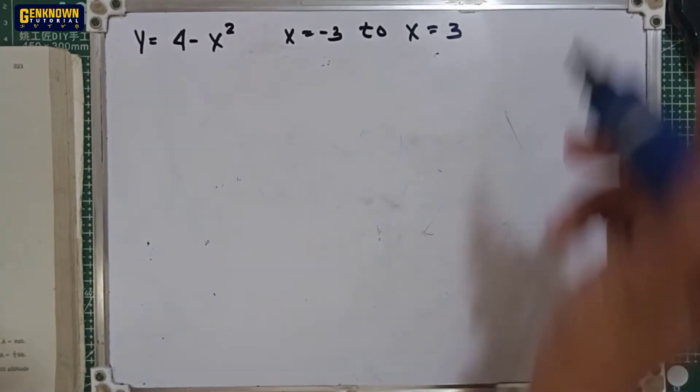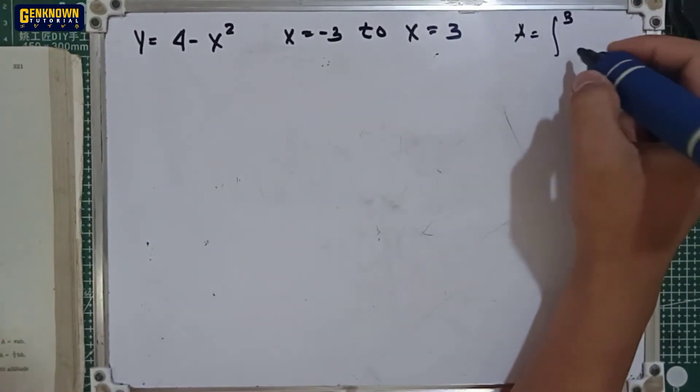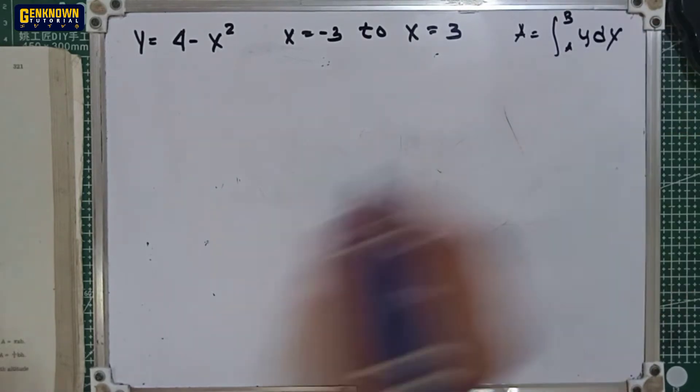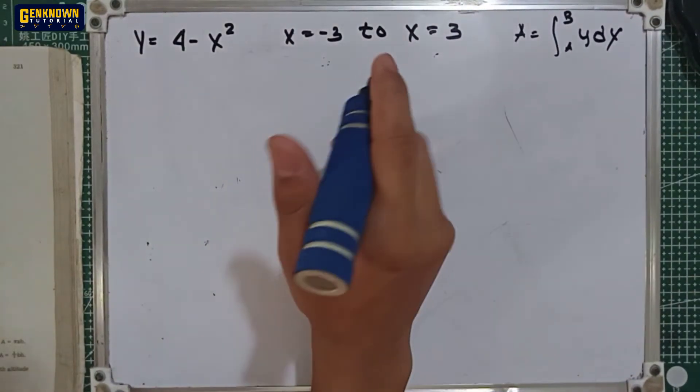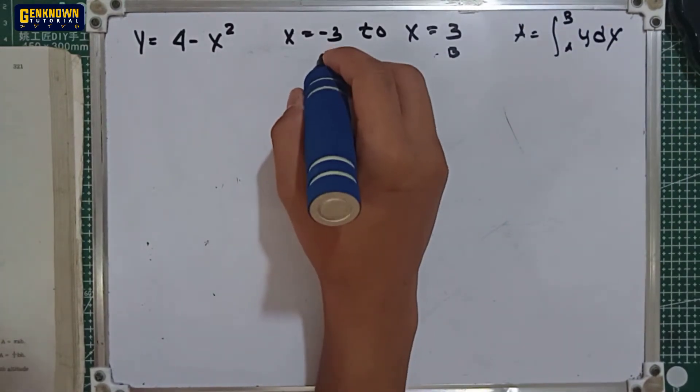Remember the area is equal to the integral of the upper limit b and lower limit a, y dx. By looking to the constants, we can easily find that b is positive 3 and a or the lower limit is negative 3.